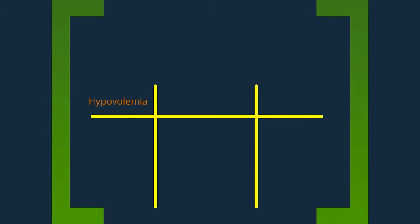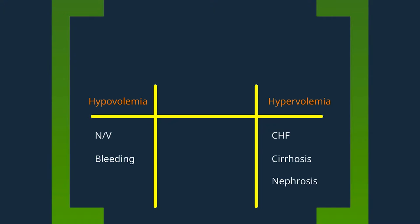Let's build our tree. There's hypovolemic hyponatremia — common causes include nausea, vomiting, and GI bleeding. There's hypervolemic hyponatremia, caused by the edematous states: CHF, cirrhosis, and nephrosis.